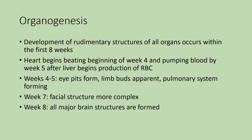Organogenesis is the development of all the organs. The rudimentary structures occur within the first eight weeks. The heart starts beating at about the beginning of week four — some say week three, but certainly by week four. It is not initially pumping blood; blood is being pumped by week five, once the liver starts producing red blood cells. Without red blood cells, it is hard to pump blood.